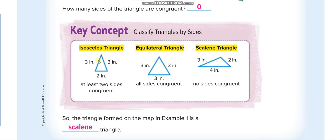When classifying by sides, there are three types. When all three sides are equal — for example, three inches, three inches, three inches — all sides are congruent, and we call that an equilateral triangle. When at least two sides are congruent, we call it an isosceles triangle.